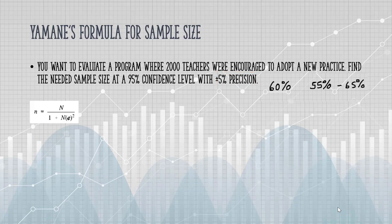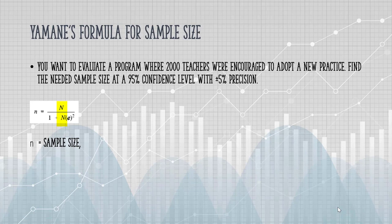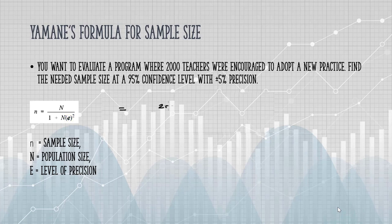Here's Yamane's formula. The small n is the sample size, and that's what we're trying to find. Capital N is the population size — for this particular question, that's 2,000. And E is the level of precision, stated as 5%. Plugging those numbers into the formula...